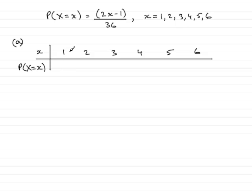So for 1, for instance, when little x is 1, just put it into the formula here. We have 2 times 1 is 2, take away 1 is 1, and so you have 1 over 36. Put the observed value 2 now into the formula: 2 times 2 is 4, take away 1 is 3, so you have 3 over 36.